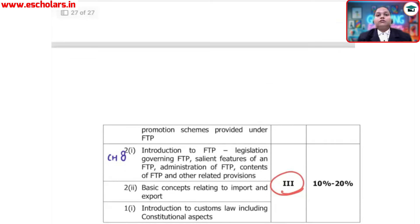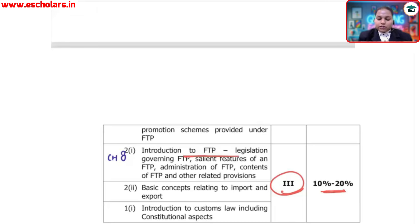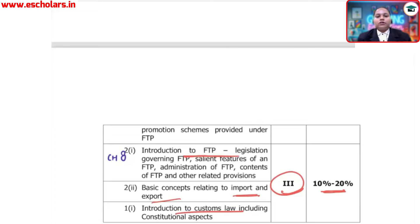Customs Section 3 carries 10% to 20% weightage, covering the basic concepts of Foreign Trade Policy (FTP), its provisions, import and export procedures, and an introduction to Customs Law, which was Chapter 1. This introduction topic falls under this section.